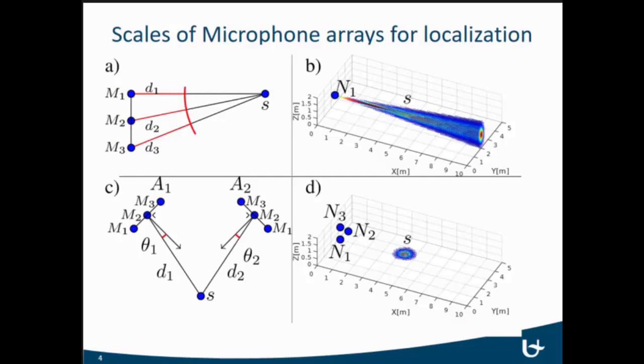In panel C at the bottom, we combine multiple of such smaller-scale arrays. They have the angle of arrival, and then we can use time difference of arrival to get the full 3D localization as shown in the last panel there.